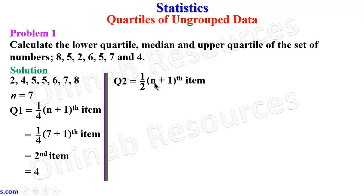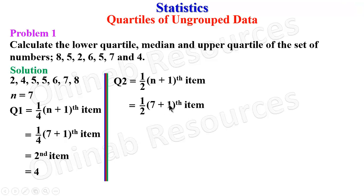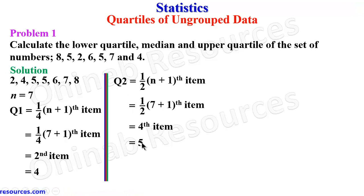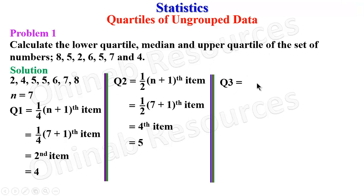For the median Q2, the formula is 1/2 × (n+1) item. With n = 7, we get 1/2 × 8 = 4, so we look for the fourth item. Counting 1, 2, 3, 4 — the fourth item is 5. Therefore the median Q2 is 5.